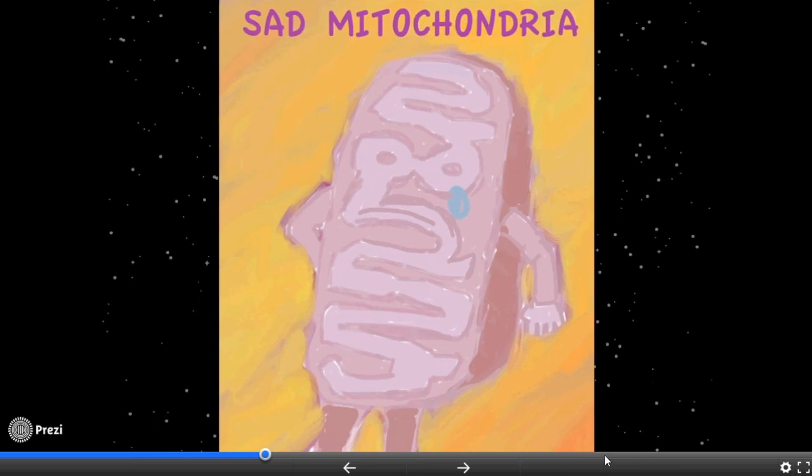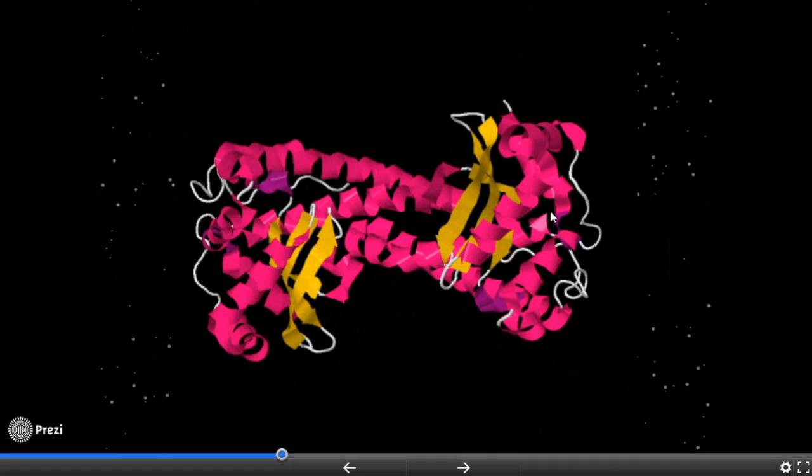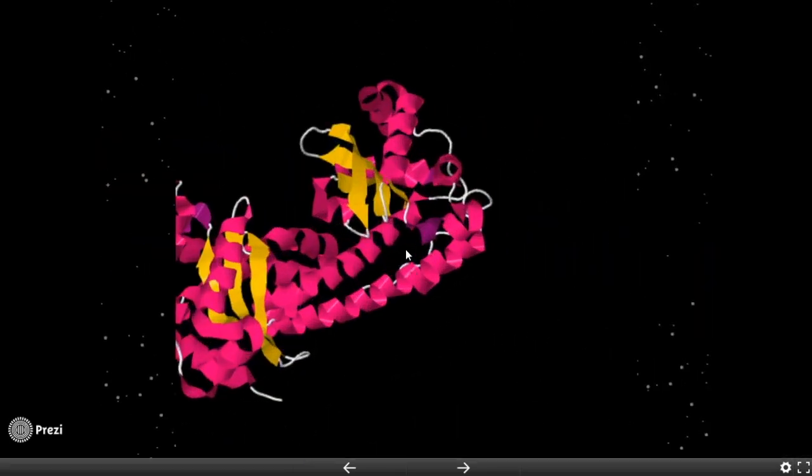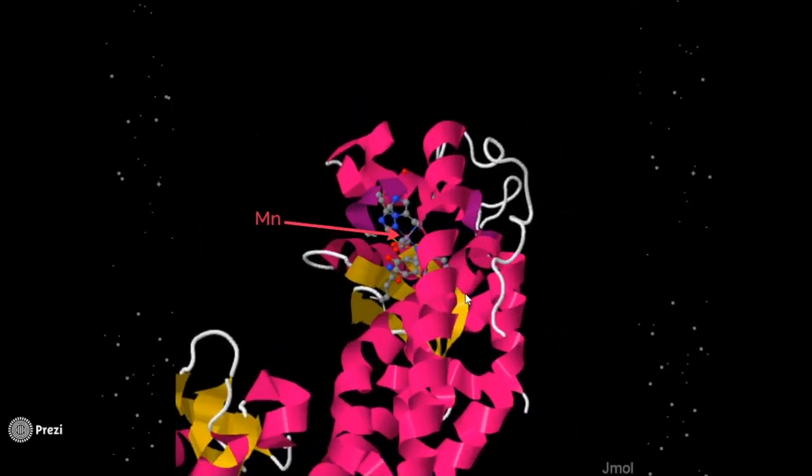Now let's get a little more specific about manganese superoxide dismutase's structure. Notice that this enzyme has two identical subunits. It is a dimer. This area of the enzyme is what contains the active site. Notice that this active site is a fairly deep pocket of the enzyme.